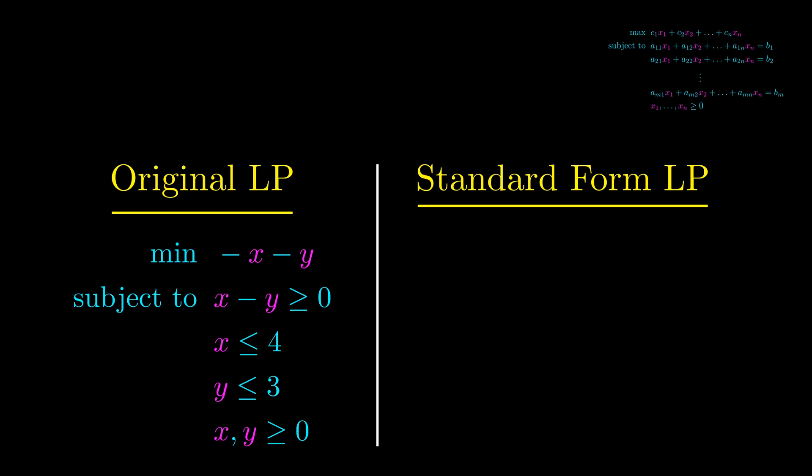First, we need to transform the objective from a min to a max. Minimizing a function is equal to maximizing the negative of that function. So we just multiply the objective by minus one and change it to a max. Now we need to transform the three middle inequalities into equality constraints.